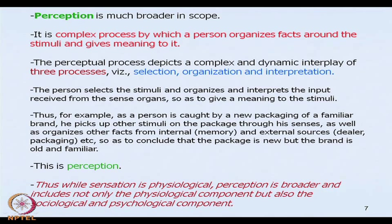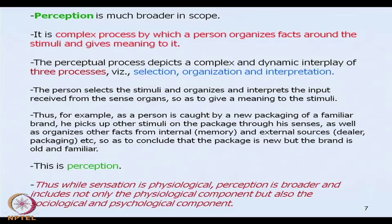While sensation restricts itself to obtaining sensory impressions via sense organs from the environment, perception is much broader. It involves the complex and dynamic interplay between selection, organization, and interpretation. A person selects a stimulus, then organizes and interprets it so as to give meaning to it. For example, if a person is caught unawares by a new packaging of a familiar brand, he picks up stimuli from the package through his senses, organizes other facts from his memory and external sources like the dealer, advertisement, or packaging, to conclude that the packaging is new but the brand name is old and familiar. Sensation is more of a physiological process, but perception is much broader — it also includes the impact of sociological and psychological components.